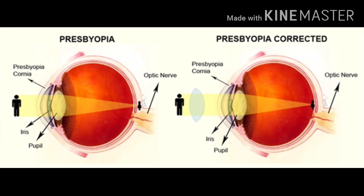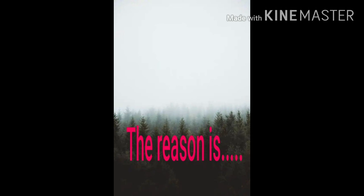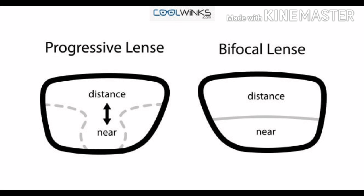The third defect is presbyopia. It is due to the power of accommodation decreasing with aging, because of the gradual weakening of the ciliary muscles and the diminishing flexibility of the eye lenses. In such conditions, the person cannot see nearby objects distinctly, nor far away objects. This can be corrected by a bifocal lens containing both concave and convex lenses in the same spectacle.